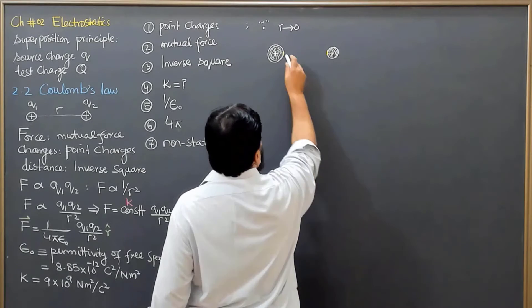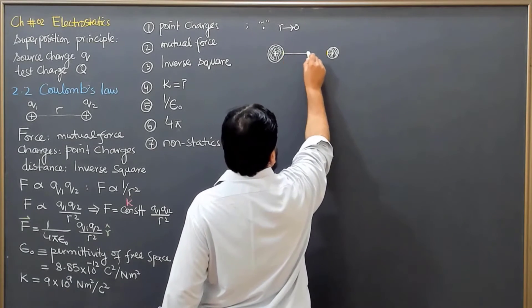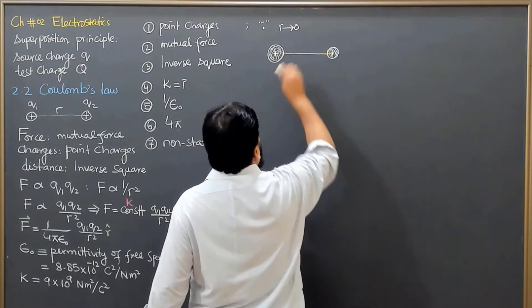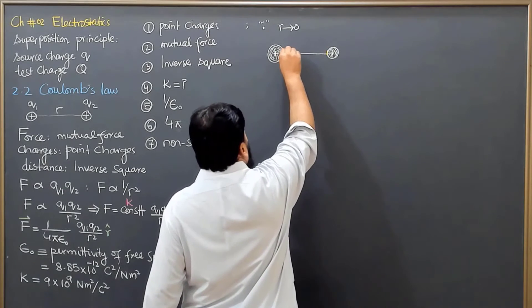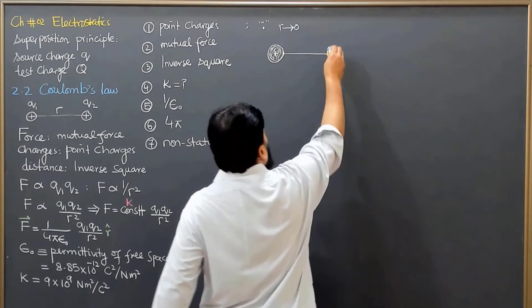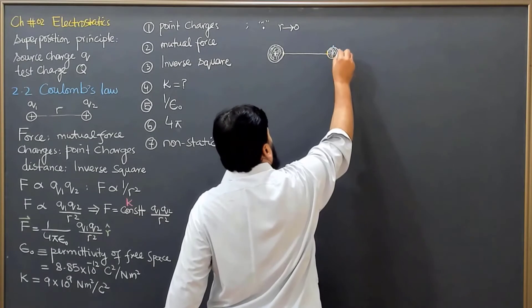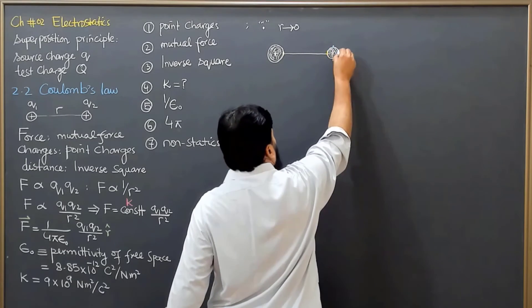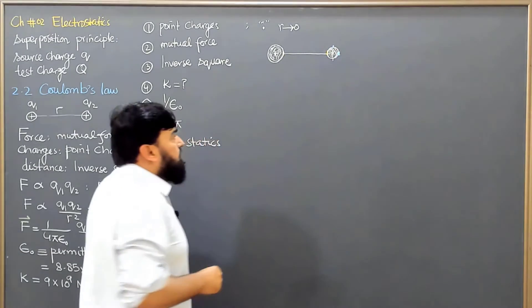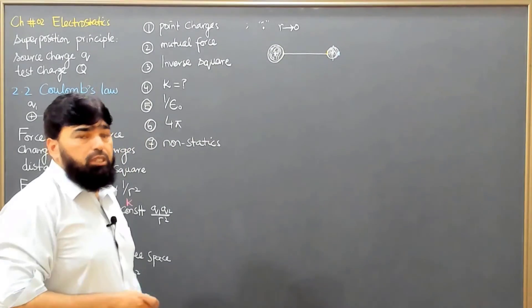But if the same charge, portion of the charge, is interacting anywhere else, let's say for example at this place or this place or this place, then the distance will not be the same.